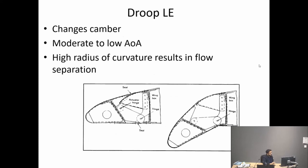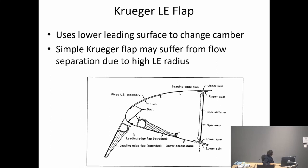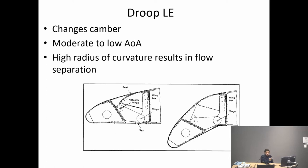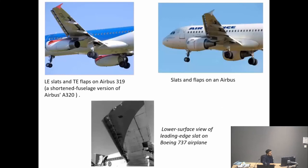The droop nose is similar — a whole section of the leading edge droops downward. In effect it's similar to a Kruger flap or a leading edge slot: it changes the effective camber towards the leading edge, accelerates the flow, and energizes the boundary layer. However, from experience, the droop nose is good for moderate to low angles of attack; it is not the best at high angles of attack. Leading edge slots can go to much higher angles of attack, which is why they are the most efficient of the three.